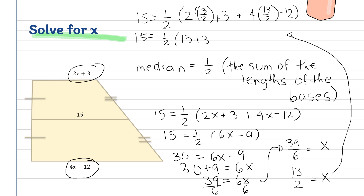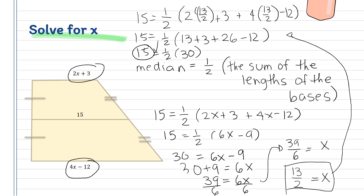4 × 13/2 = 26. So 26 − 12 = 14; 13 + 3 + 14 = 30. 30 ÷ 2 = 15. So 15 = 15, therefore our answer is correct. The value of x is 13/2.